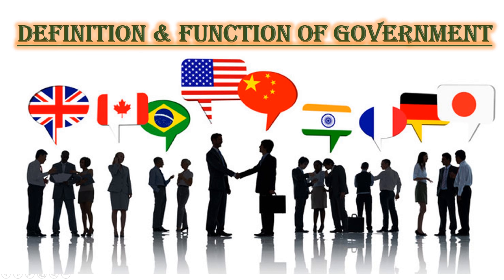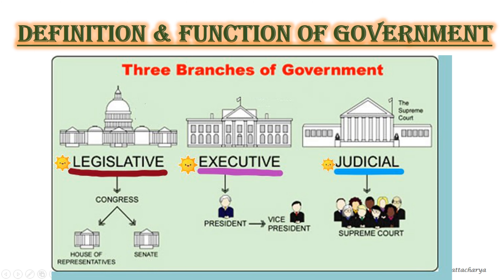The functions of the government are carried out by its three organs. Government has three organs: the Legislature, the Executive, and the Judiciary. The Legislature is the law-making organ. The Executive implements the law. The Judiciary ensures that these laws are carried out.